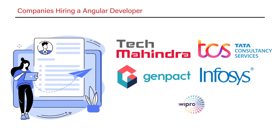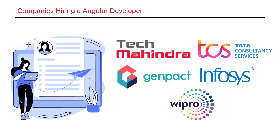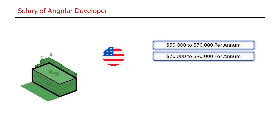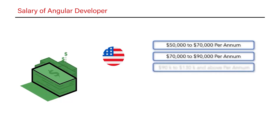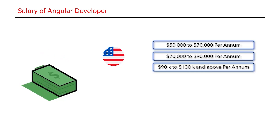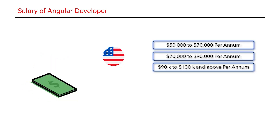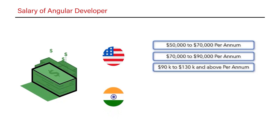Let's also discuss the salary range for Angular developers. If you are in the US and a beginner, you can expect salaries ranging from $50,000 to $70,000 per annum. Intermediate candidates with one to two years of experience can expect $70,000 to $90,000 per annum. Experienced candidates with three or four or more years can expect $90,000 to $130,000 or above, based on experience and the company.